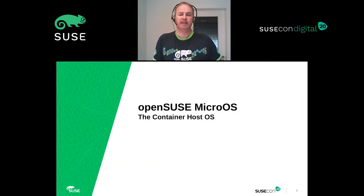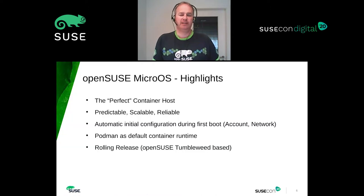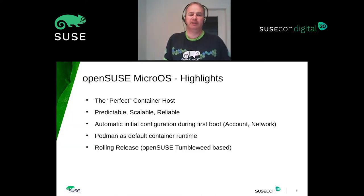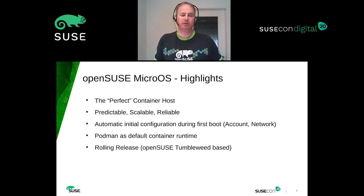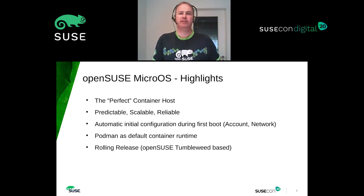The container host OS we use for OpenSUSE Kubic is OpenSUSE MicroOS. It's what we call the perfect container host — it's predictable, scalable, reliable, and automatic. Initial configuration happens automatically during first boot, especially for accounts and networking. We use Podman as the default container runtime, and since it is based on OpenSUSE Tumbleweed, it's a rolling release. Rolling release means whenever there is a new version upstream, we package it, put it in Tumbleweed, and you get it immediately.